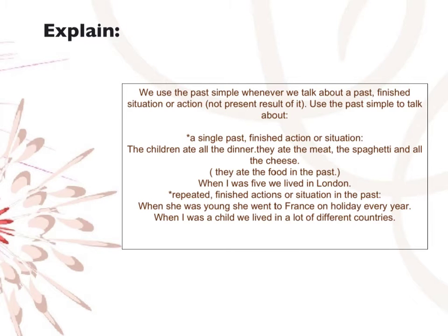Now I will explain it. We use the past simple whenever we talk about a past finished situation or action, not the present result of it. Use the past simple to talk about a single past finished action or situation — for example, the children ate all the dinner. They ate the meat, the spaghetti and the cheese. They ate the food in the past.